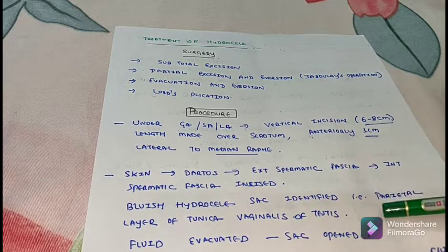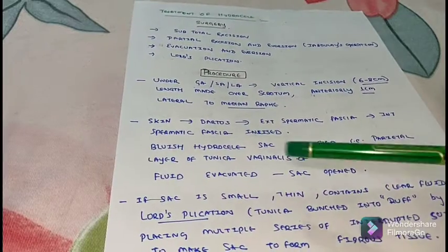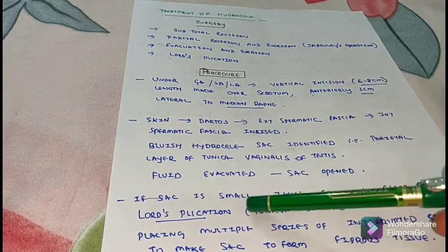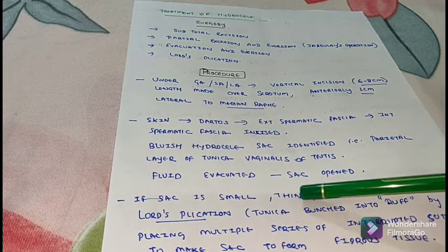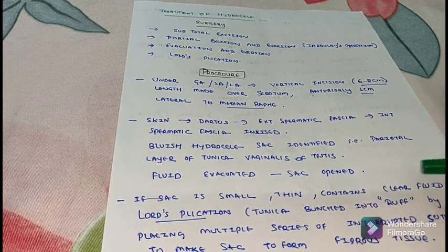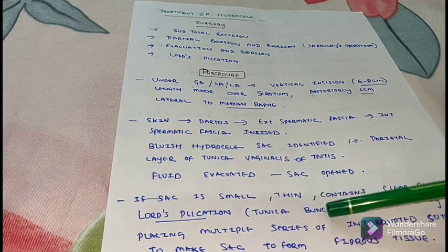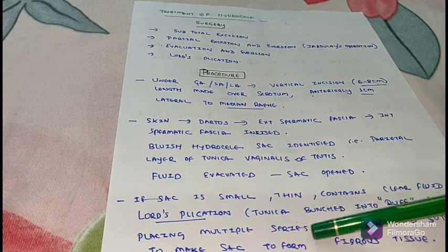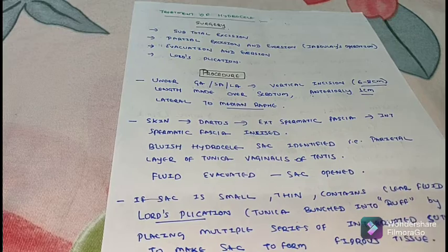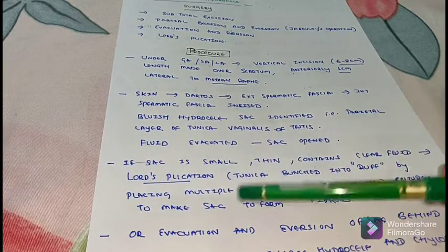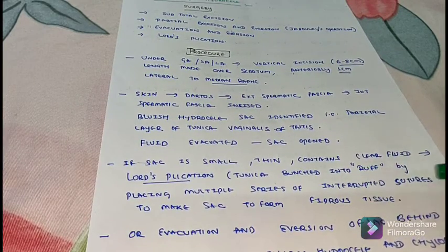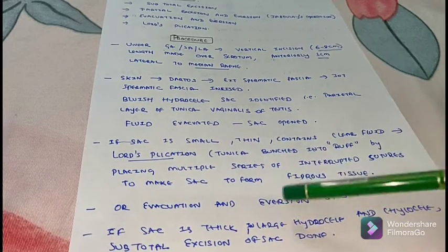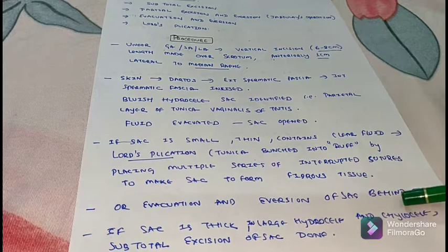If the sac is small and thin and contains clear fluid, Lord's plication is done — the tunica is bunched into a ruff by placing multiple series of interrupted sutures to make the sac form fibrous tissue. Alternatively, evacuation and eversion of the sac behind the testis is performed. If the sac is thick, in large hydrocele or chylocele, subtotal excision of the sac is done.